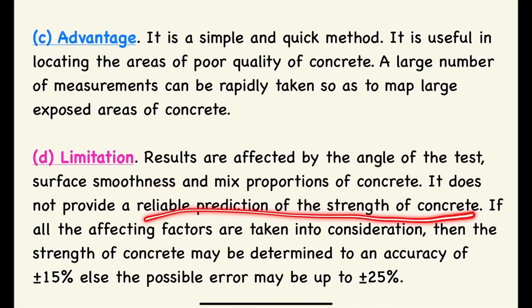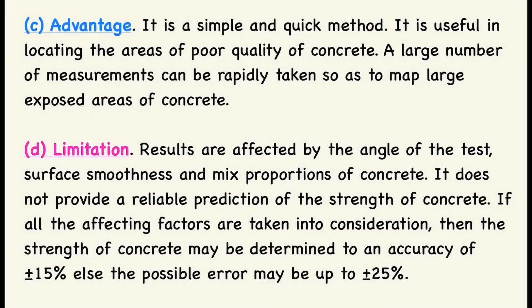When performing this test on site, we must keep in mind the angle of test, mixed proportion, and surface smoothness — otherwise it will not give a reliable prediction of strength. Today people increasingly prefer the UPV (Ultrasonic Pulse Velocity) test because it gives a more reliable value, whereas the rebound hammer test may not give reliable values if these three key points are not satisfied.